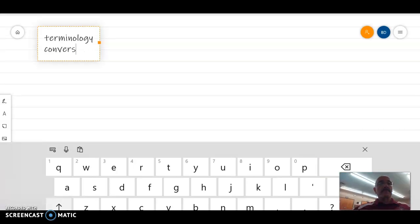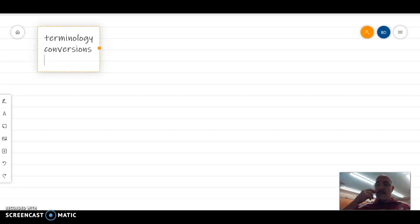Second thing we covered was conversions. And, conversions included the small c calorie to big C calorie, the joule to small c calorie, and all the different conversions there.